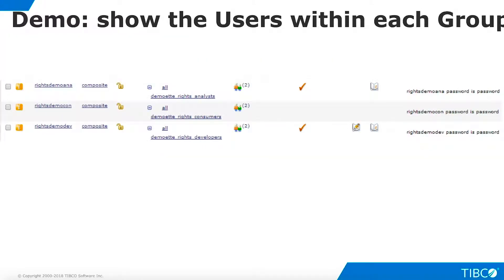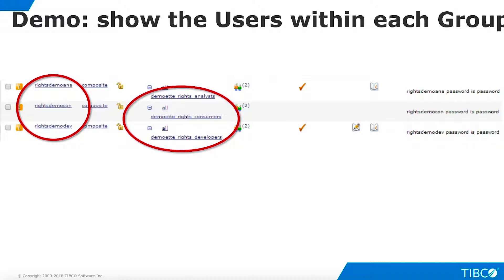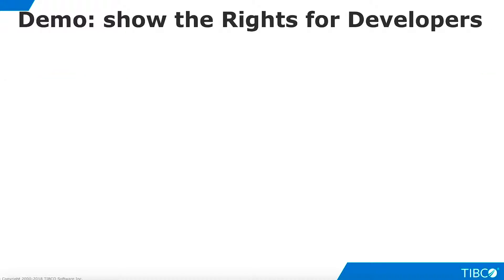Navigate to the user management screen on the Users tab. We have created three users for this demo. Click the plus sign in the Groups column to show how each user is assigned to a different group. For convenience, we have noted in the Annotation column that the password for each user is 'password'.